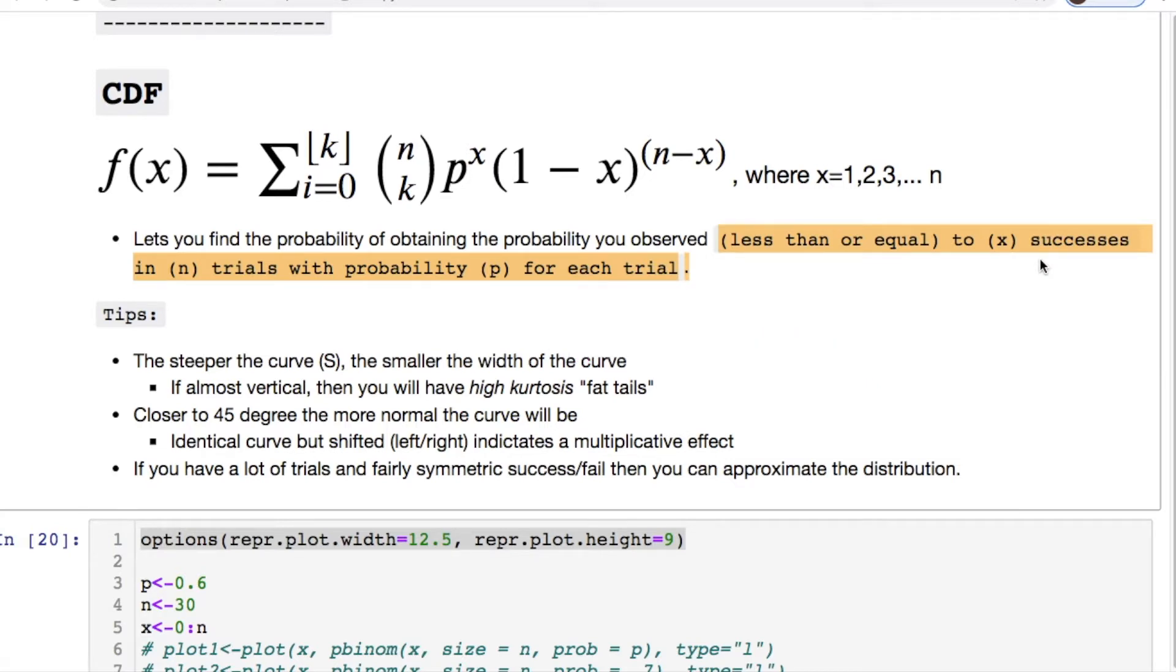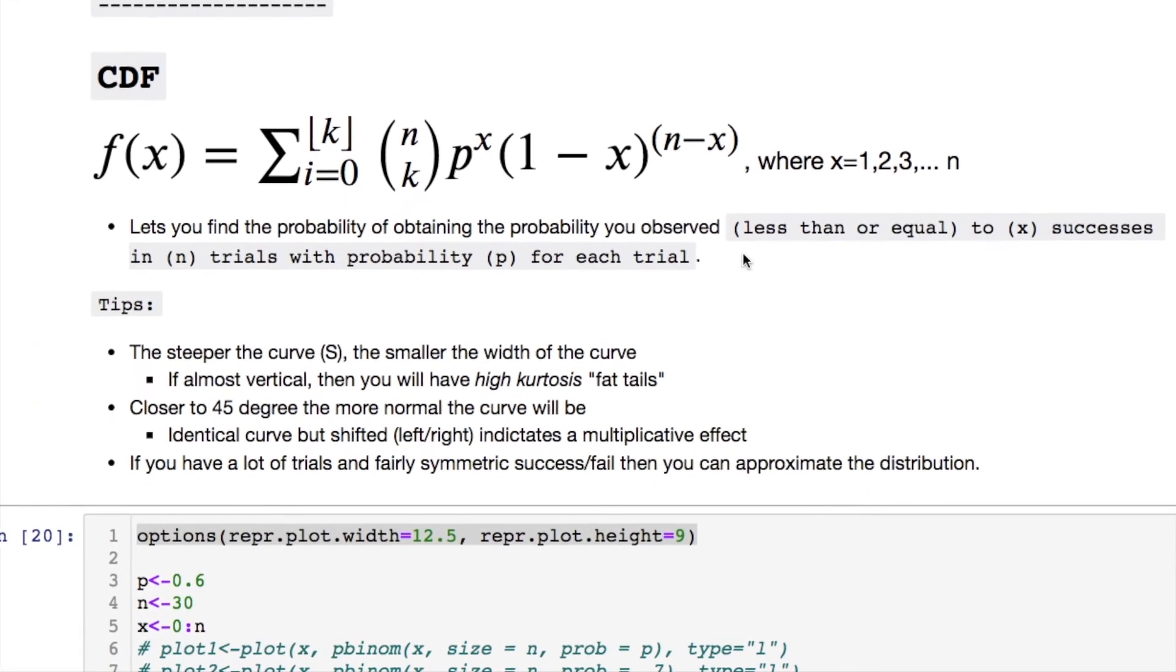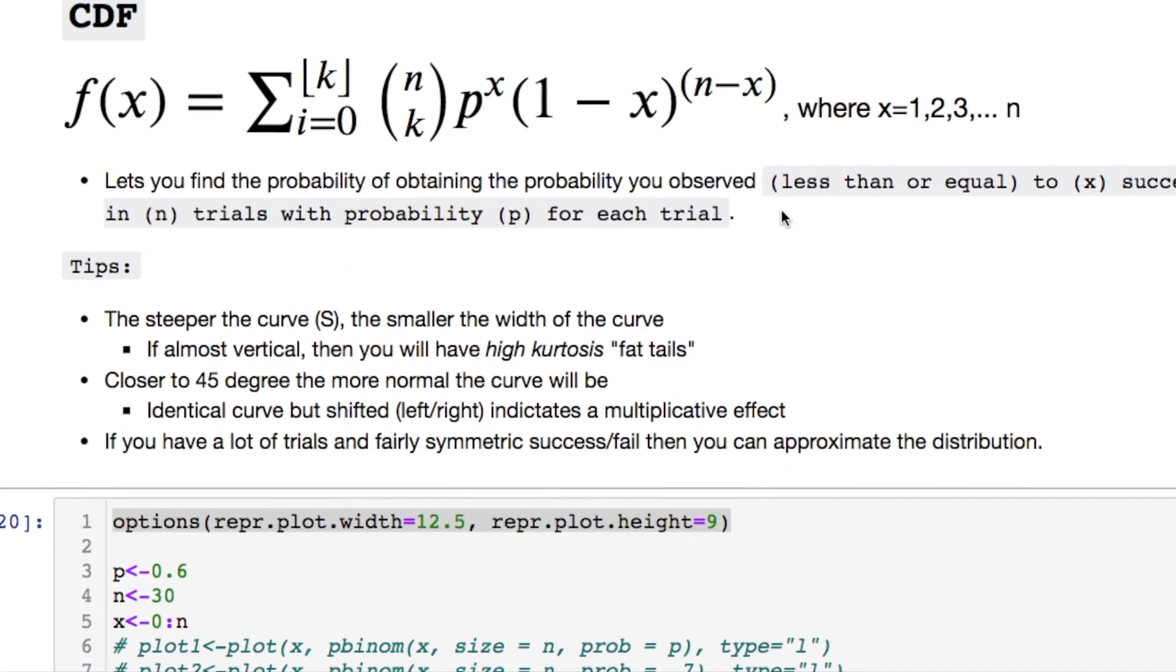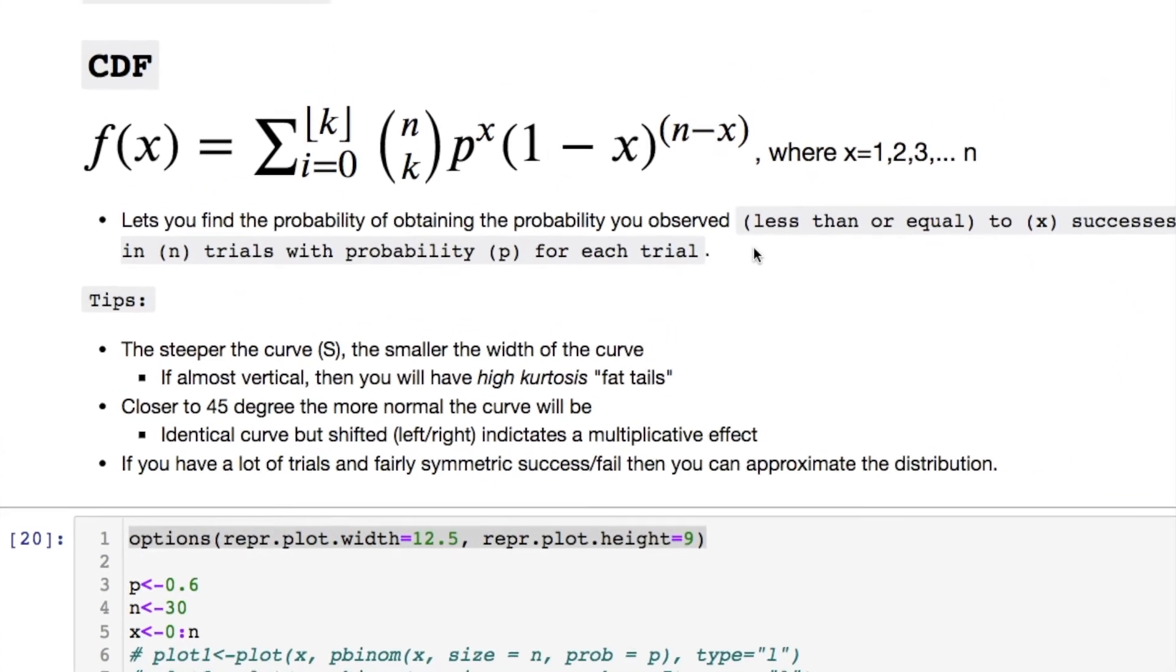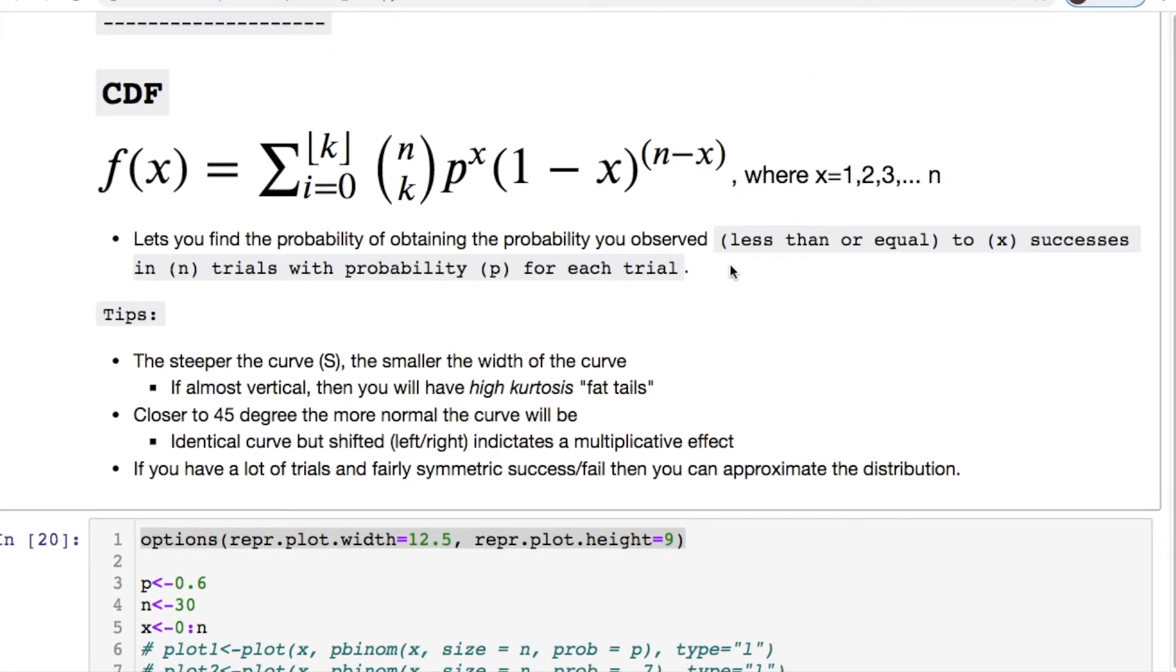We'll see what this looks like in a plot soon. Now some tips that you can look at when you're evaluating this plot: you're going to notice that it has an S curve. The steeper it is, the smaller the width of the curve. For instance, if it's almost a vertical curve you'll have a high amount of kurtosis.